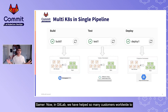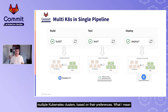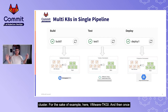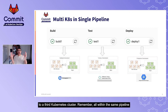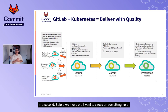In GitLab, we have helped many customers worldwide adopt a deployment and provisioning strategy for their applications in one single pipeline, pushing to multiple Kubernetes clusters. Some customers I've worked with build on Amazon EKS, then do testing using VMware TKGI, and once build and test are done, push the application to a third Kubernetes cluster — Google Kubernetes Engine — all within the same pipeline, which we'll see live in the demo.